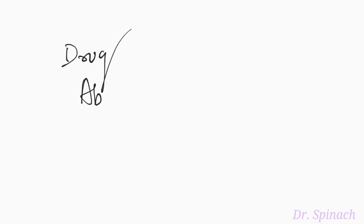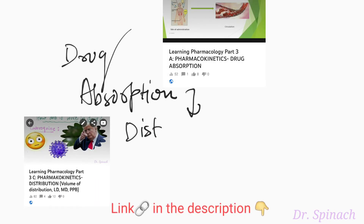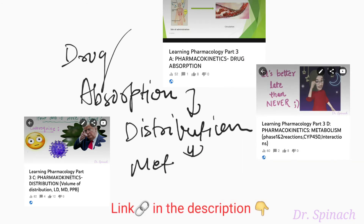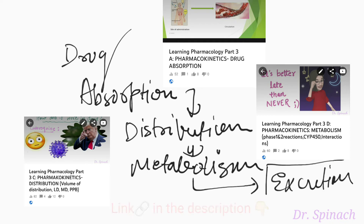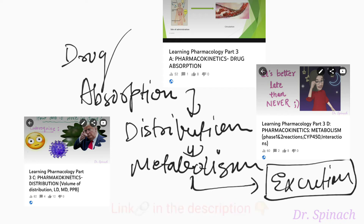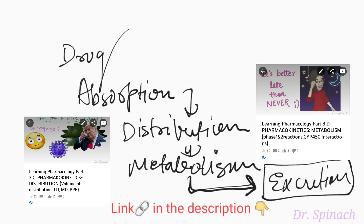If you recall, we have already discussed about drug absorption, distribution of drug into different body parts, and metabolism of drug so that it can be converted into a suitable metabolite that can be excreted out of the system. Elimination of the drug is the most important part of all, because accumulation of any drug will cause toxicity in the body.